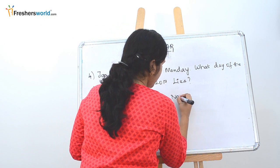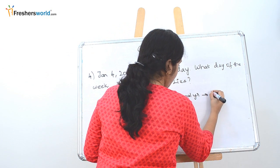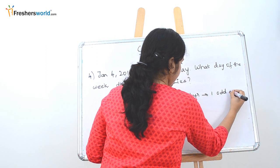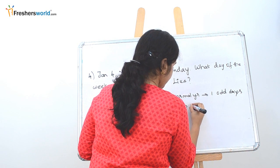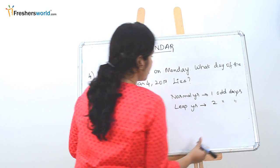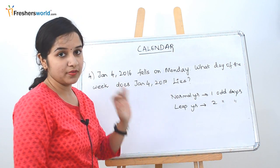So in a normal year, we have one odd day. In a leap year, we have two odd days. So this is going to be the basic for solving this sum.